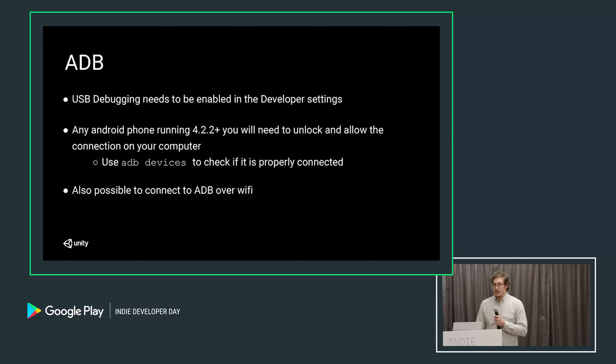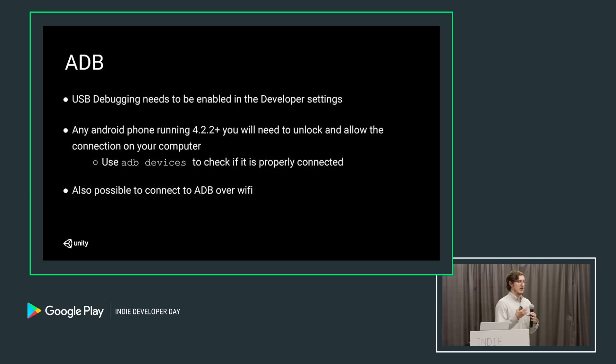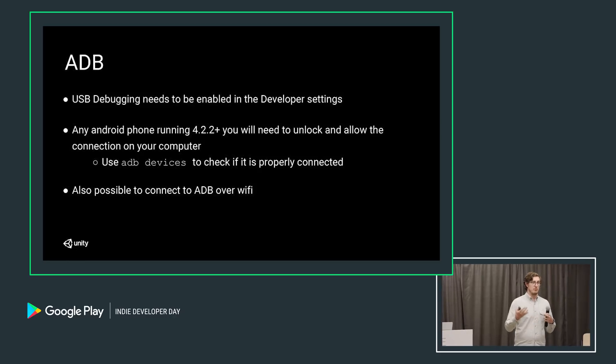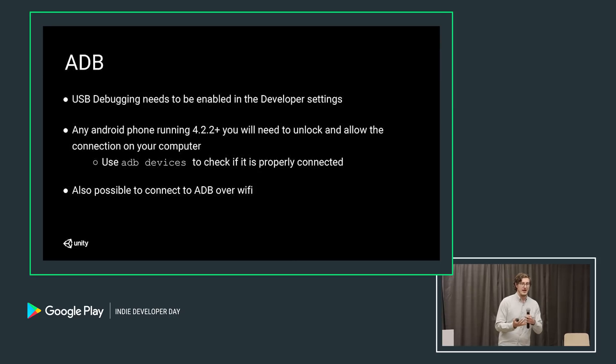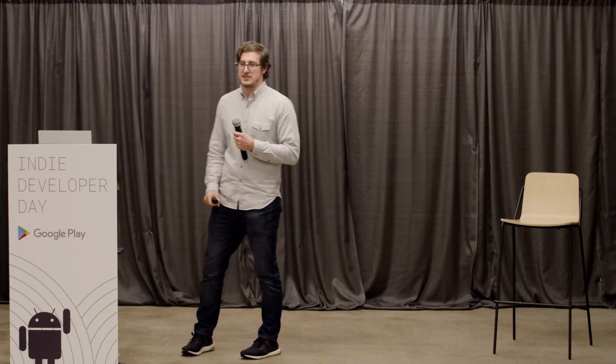One thing to keep in mind is that ADB gives you a lot of information back. If you're not using any filtering, it'll be hard to read or understand what's happening as information continually flies through the console. If you're using a more modern phone, you will need to unlock your phone and allow USB debugging — that's an option in the developer settings. Hopefully your Android device is already in developer mode with the USB debugging checkbox enabled, and then you can connect it to your computer and start hooking up ADB.